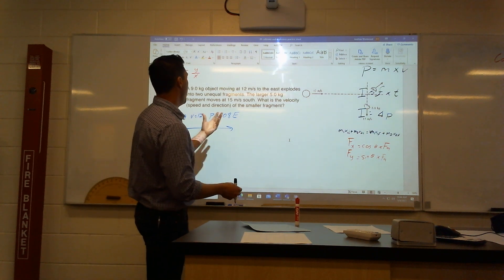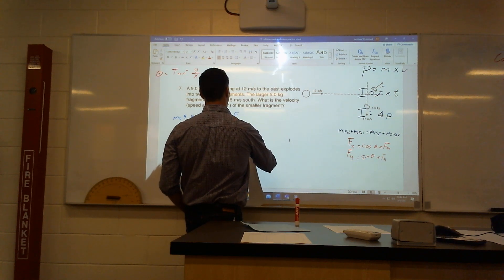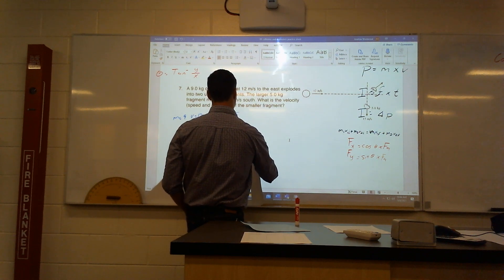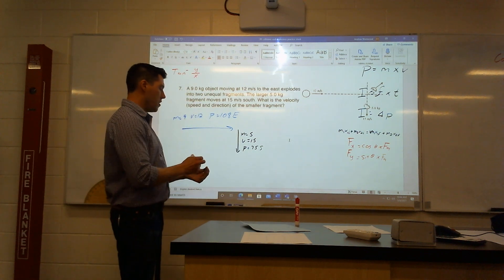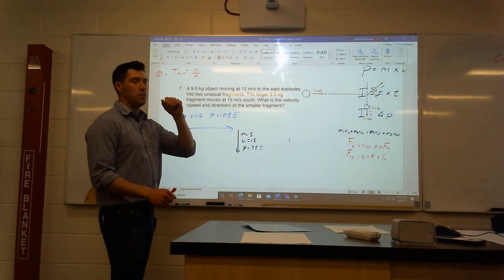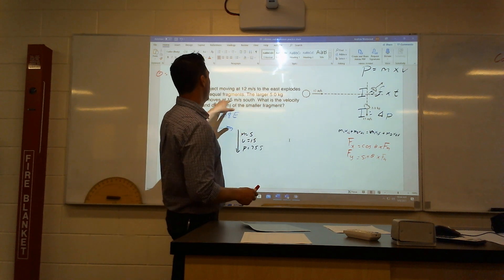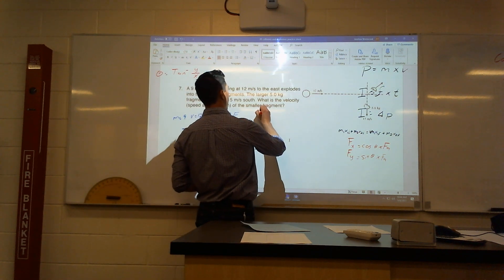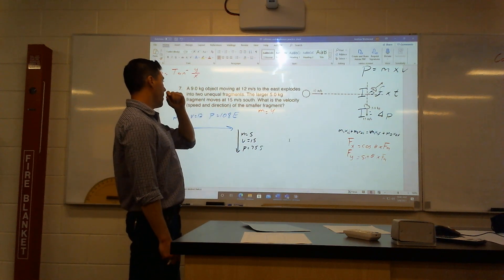It says the larger five-kilogram piece moves straight down, south. So it breaks into this: mass of five, velocity of 15, and momentum of 75, but totally south, not anywhere in our east direction. So it says find the velocity, which is speed and direction, of the other fragment, the mass of four. Because we had nine mass, we had a mass of five here, so we know there's going to be a mass of four. Now how do I know what's going to happen here?